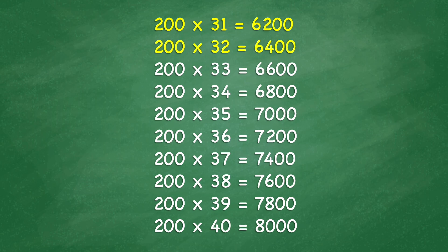200 times 36 equals 7,200. 200 times 37 equals 7,400. 200 times 38 equals 7,600. 200 times 39 equals 7,800.